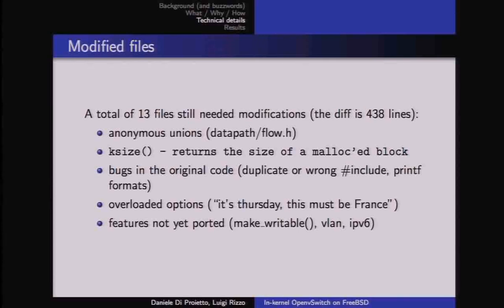Despite the goal of no modifications, we ended up changing 13 files with about 400 lines of diffs. One issue was anonymous unions: Linux uses them extensively, but FreeBSD does not handle them the same way. The fix was to comment out the union keyword around structure definitions — making structs slightly larger than their Linux counterparts but avoiding accidental field overwrites.